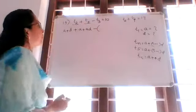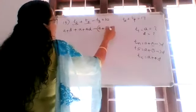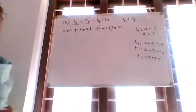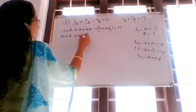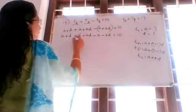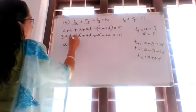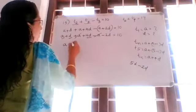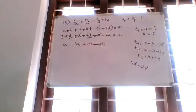Minus of T3: T3 is A plus 2D. So putting a bracket, we have A plus D plus A plus 4D minus bracket A plus 2D equals 10. Removing the bracket: minus A minus 2D. So A plus A minus A gives one A remaining, and D plus 4D minus 2D gives 3D. So A plus 3D is equal to 10. Let it be equation number 1.